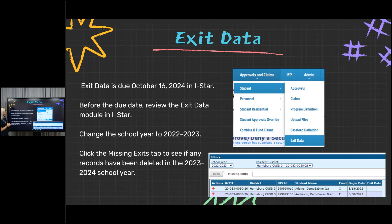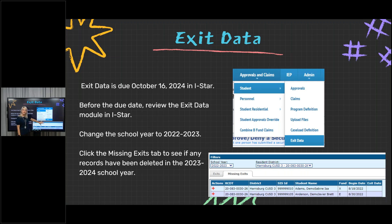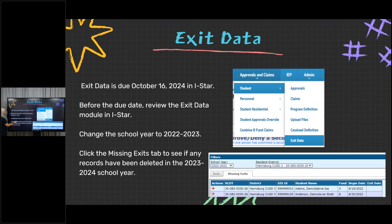Exit data is due October 16th in I-Star this year. Before the due date, make sure you didn't miss any exits. If you deleted a record and used the checkbox to bypass, go to the exit data tab and make sure all exits have exit dates in them — you want your exit data to be correct.